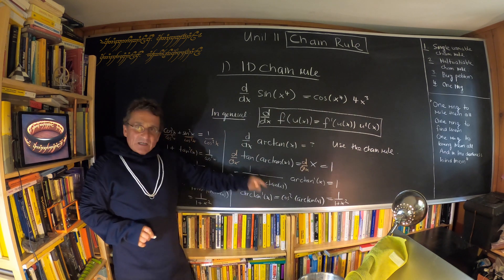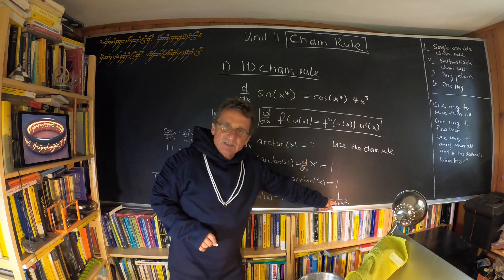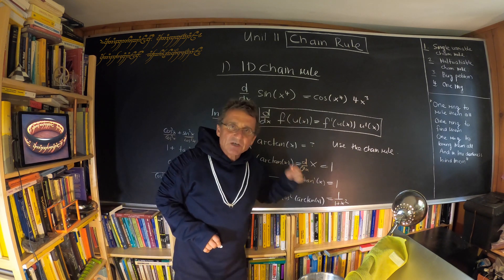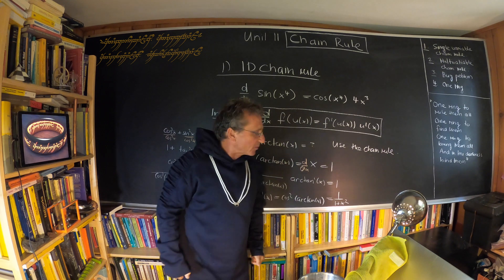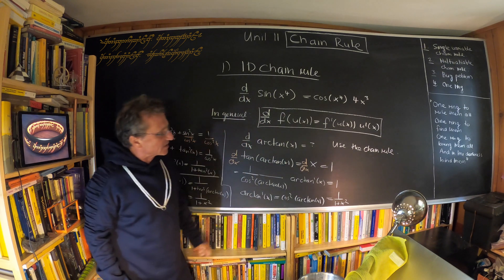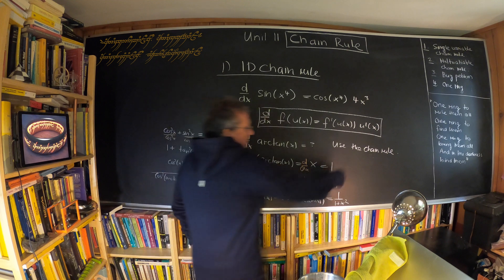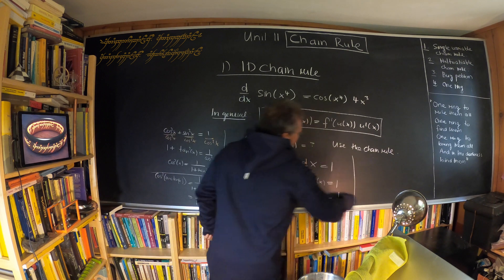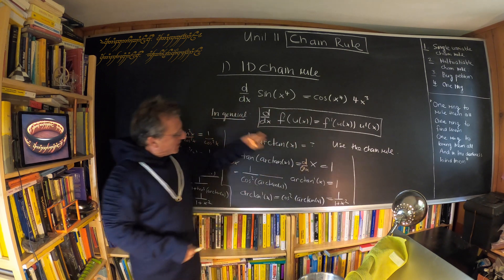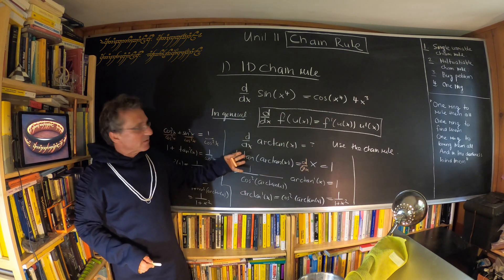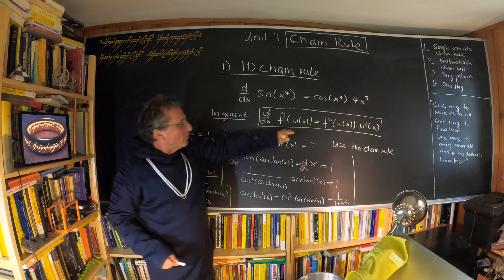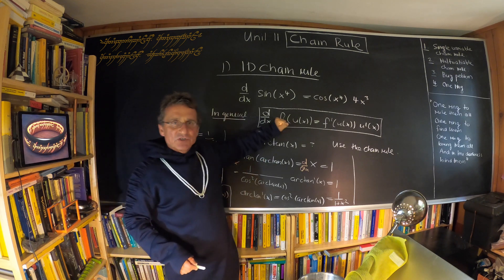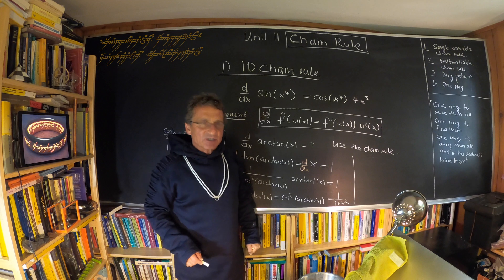So arctan'(x) = 1/(1 + x²). The reason arctan is so important is because 1/(1+x²) is a very important function which often appears — for example, it's the Cauchy distribution when divided by π. That's a little advertisement for the single variable chain rule.